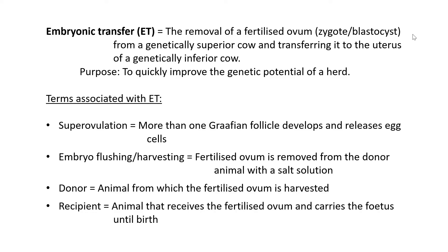The terms associated with embryonic transfer start with super ovulation. Super ovulation means that more than one Graafian follicle develops in a cow, and each follicle releases an egg cell. Usually a cow has two ovaries, so theoretically two egg cells can be released per month if two Graafian follicles develop. In nature this usually doesn't happen — typically only one ovary produces an egg cell. With super ovulation, the animal is treated with hormones so that two egg cells are produced every month.